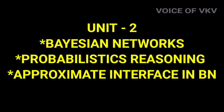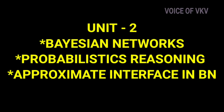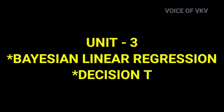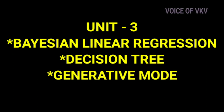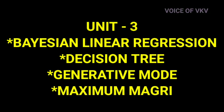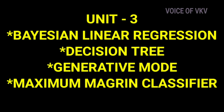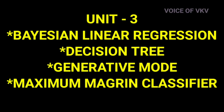If you want to skip one or two topics, you can see any topic. Moving to Unit 3 — there are 4 important topics. The 1st is Bayesian Linear Regression, the 2nd is Decision Tree, the 3rd is Generative Models, and the 4th is Maximum Margin Classifier. Unit 3 has 4 topics in total.